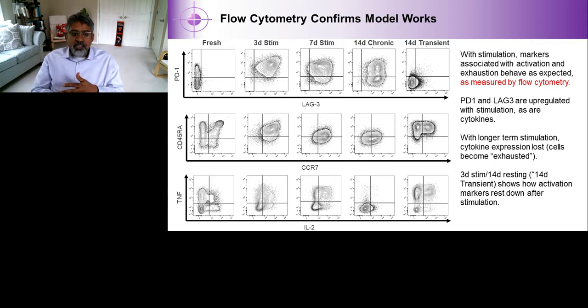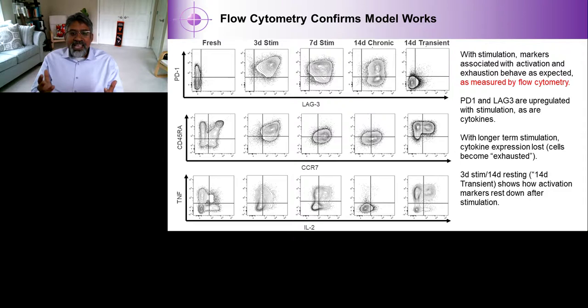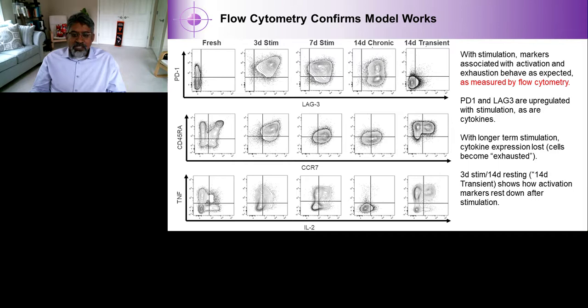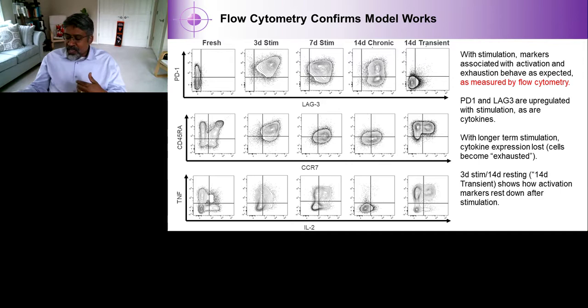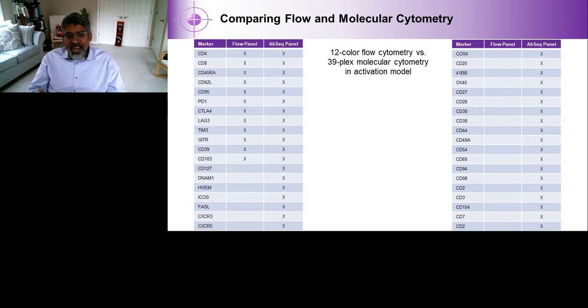We also did 12-color flow cytometry in parallel with a subset of the 39 markers from the AbSeq panel. Those flow cytometry experiments confirm that this model works. We see the expected expression of PD-1 and LAG-3, expression of CD45RA and CCR7, and cytokines TNF-α and IL-2 over the different time periods — from fresh on the left to 14-day transient on the far right. PD-1 and LAG-3 are upregulated with stimulation, not really present in fresh cells, robustly expressed by three days, and that expression is lost when cells rest back down for 11 days.